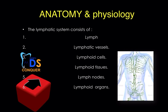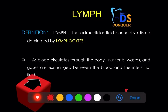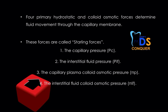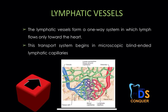Coming to anatomy and physiology, which is very important — the lymphatic system consists of the lymph, lymph vessels, lymphoid cells, lymphoid tissues, lymph nodes, and lymphoid organs. The lymph is nothing but extracellular fluid connective tissue dominated by lymphocytes. Four primary hydrostatic and colloidal osmotic forces determine the fluid movement through the capillary membrane — these are called the Starling forces, which include capillary pressure, interstitial fluid pressure, capillary plasma colloidal osmotic pressure, and interstitial fluid osmotic pressure.